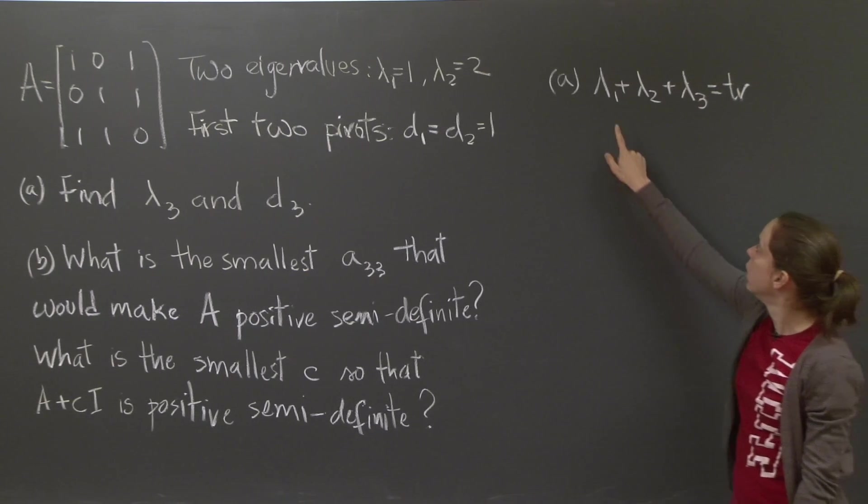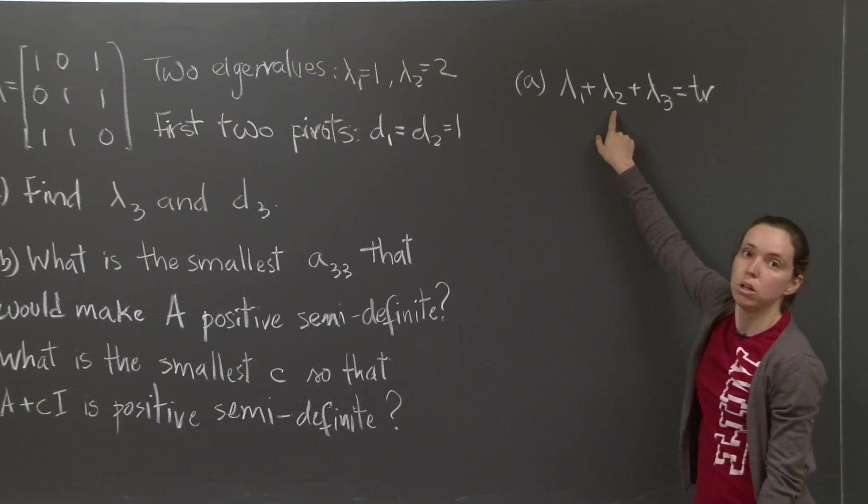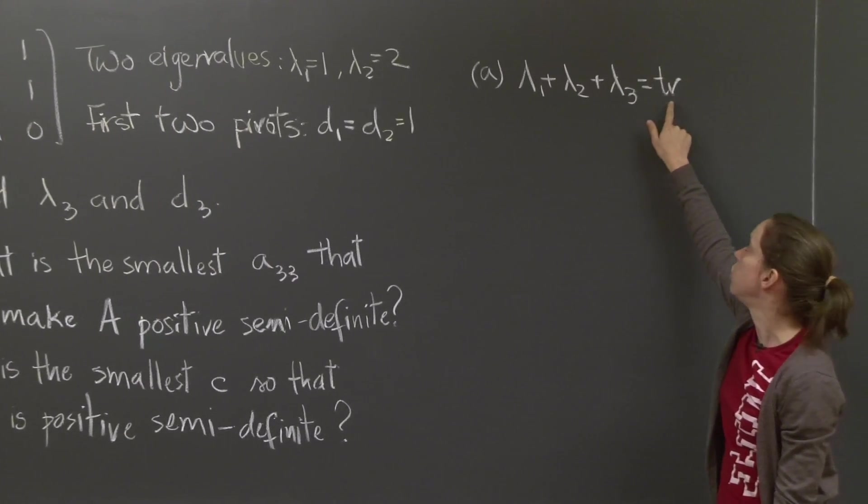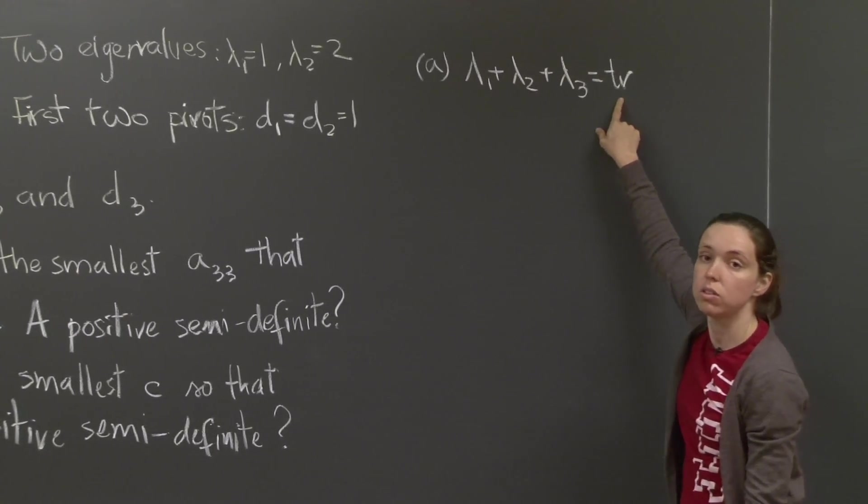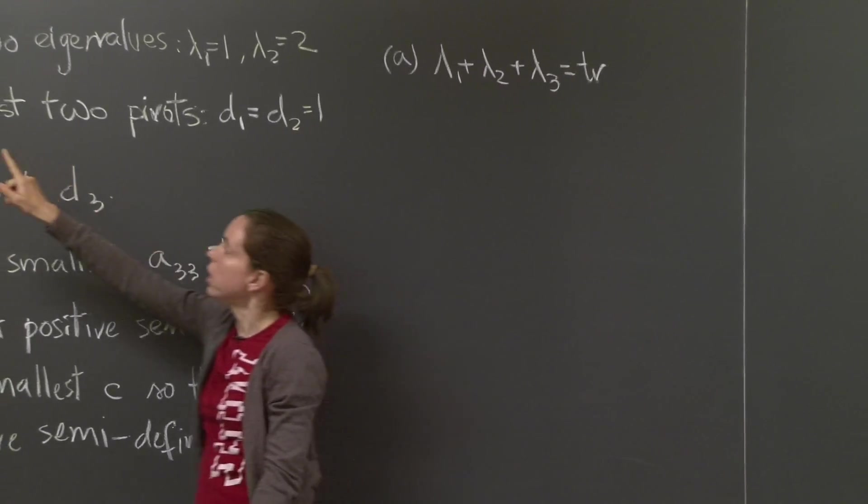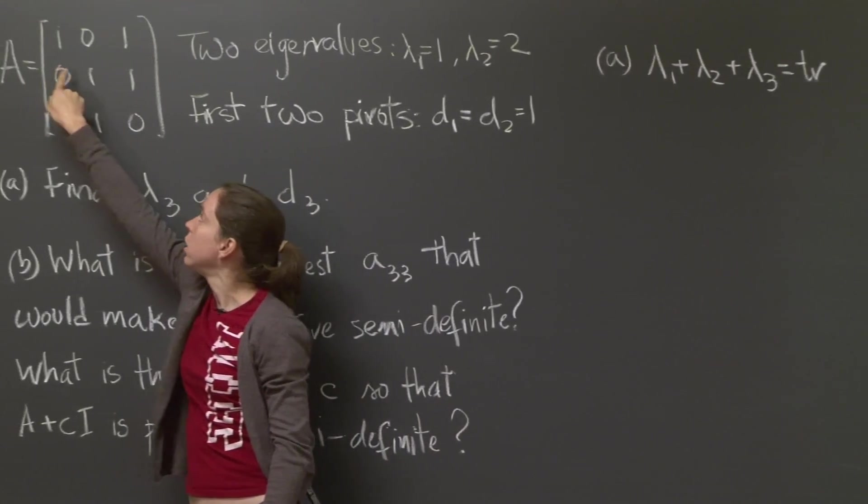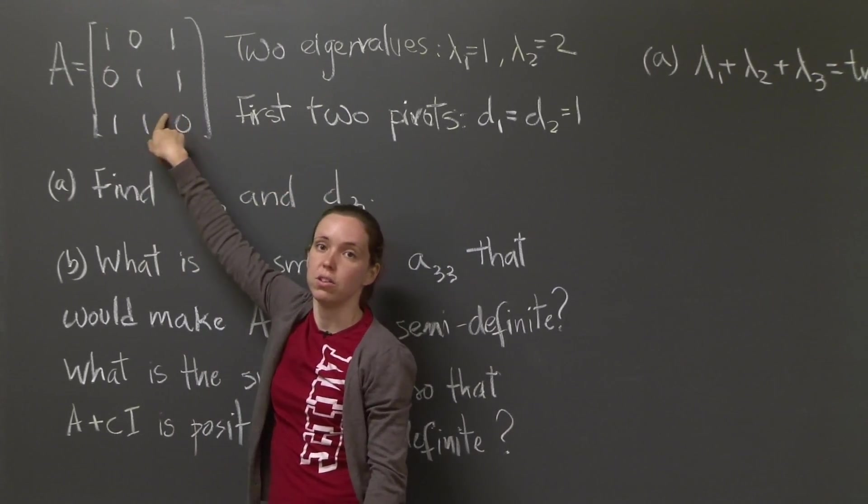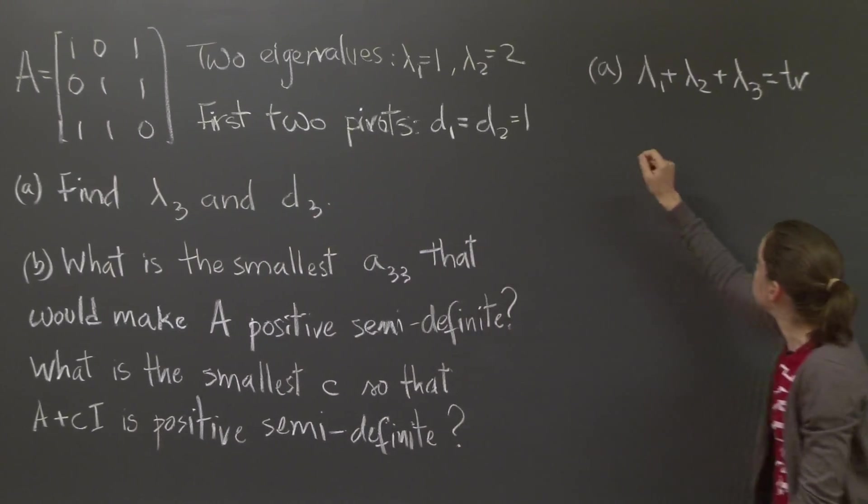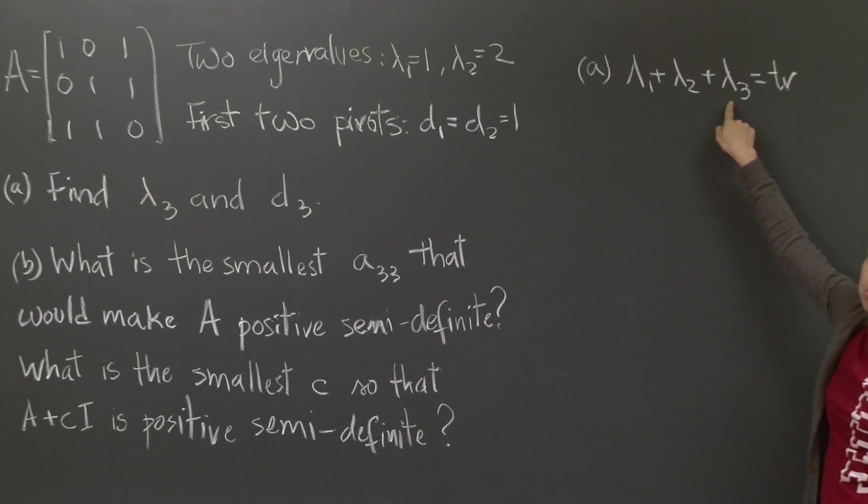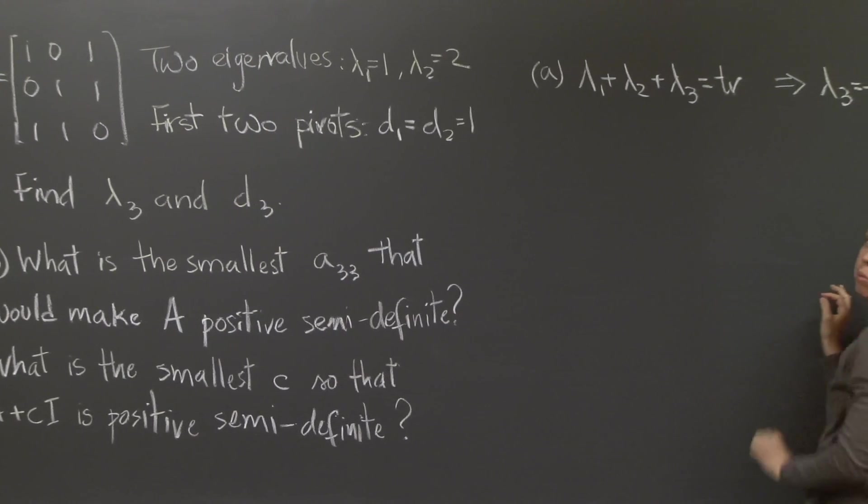In this case, you have 1 plus 2 plus lambda 3 equals to the trace. The trace is the sum of the diagonal entries. So come over here. The trace is 1 plus 1 plus 0. The trace is equal to 2. So we have 3 plus lambda 3 is equal to 2. So lambda 3 is equal to minus 1.